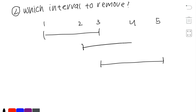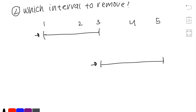At first it might seem intuitive to sort by starting point. The idea is to sort by start time, then at each interval check if it overlaps with the previous one and remove it if so. In the example with intervals 1-3, 2-4, and 3-5, we start with 1-3, then 2-4 overlaps so we remove it, then 3-5 does not overlap with 1-3 so we keep it — getting the correct answer of removing one. So sorting by starting point does seem promising.